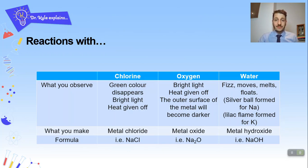Now let's look at oxygen. So for oxygen you would probably see a bright light again. Heat would be given off and the outer surface of the metal would probably become darker and that would be the oxide forming on the outer layer of the Group 1 metal. Now what you would make would be a metal oxide. And so again using sodium as an example what you would make would be sodium oxide Na2O.